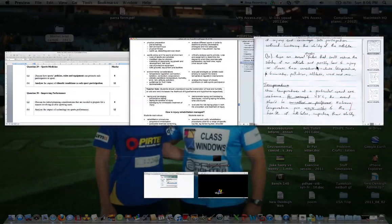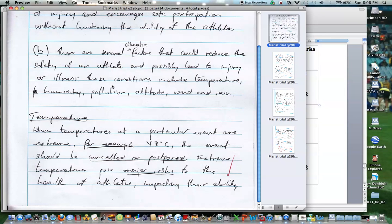We're going to have a look at our sample answer. So we've got here, there are several climatic factors that could reduce the safety of an athlete and possibly lead to injury or illness. These conditions include temperature, humidity, pollution, altitude, wind, and rain. As much as I don't like the English-style introduction, he's got it out there. It's not too bad. And all the areas of the syllabus that are required are in there straightaway.